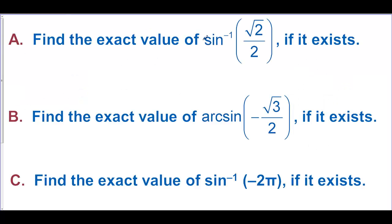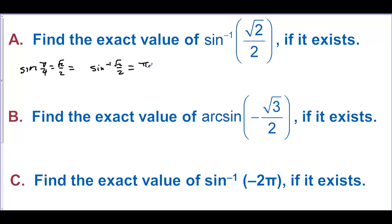Find the exact value of the inverse sine of square root of 2 over 2, if it exists. The sine of pi over 4 is equal to square root of 2 over 2. That means the inverse sine of square root of 2 over 2 must be pi over 4. So the answer is pi over 4.